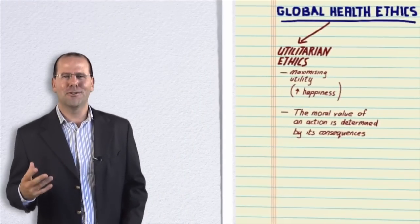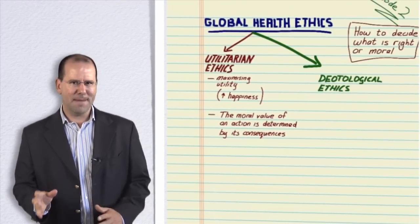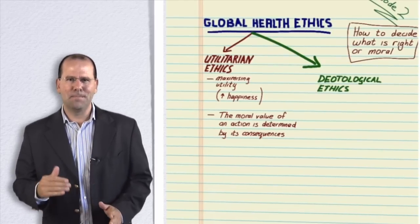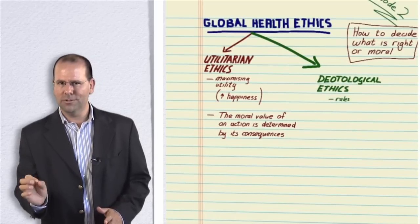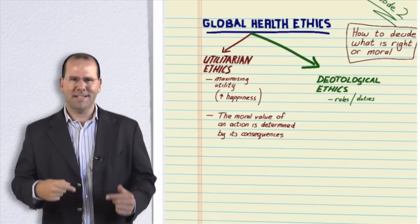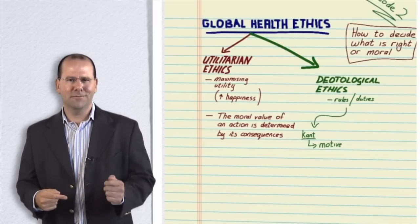Let's take a look at a contrasting idea and that is deontological ethics. This was first proposed by Immanuel Kant. Here the morality of an action is based on the action's adherence to rules and duties. Kant argues that it's not the consequence of an action that makes them right or wrong but the motives of the person who carries them out in the first place.